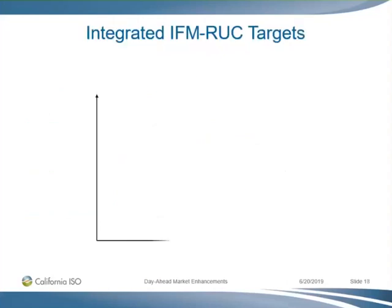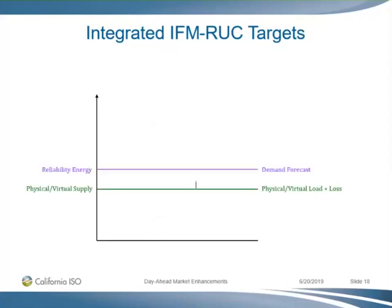Let's see how this looks in the IFM rack. We still have the power balance constraint for the financial energy schedules — that doesn't change. Here we have one additional target: the reliability energy schedules only for physical resources that meet the demand forecast. In this option, we separate the capacity product into reliability capacity, which is the capacity that needs to be reserved above the physical schedule that clears the IFM to meet the demand forecast.